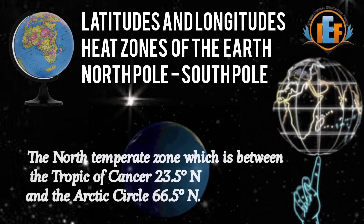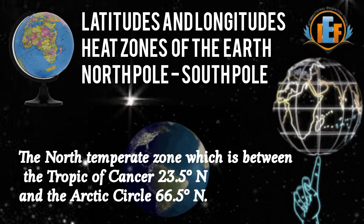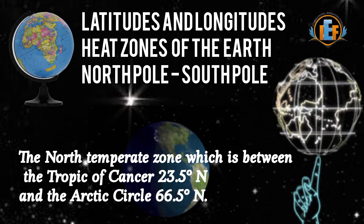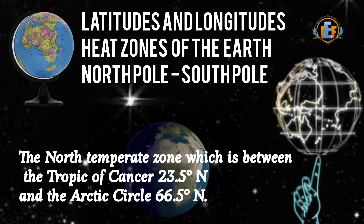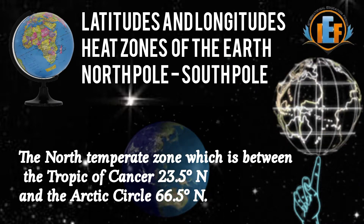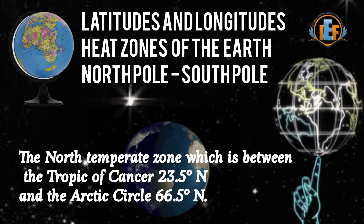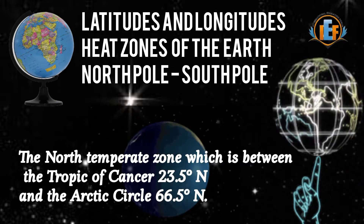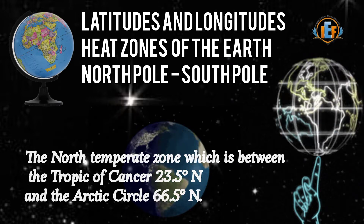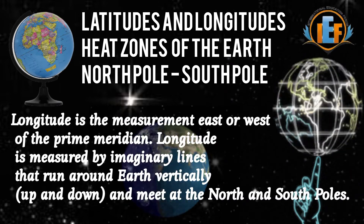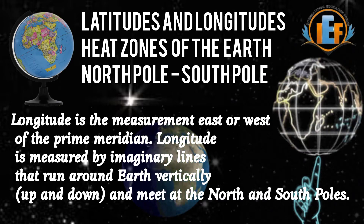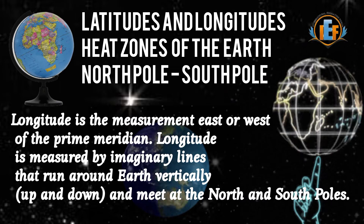They have very good and thick vegetation. The area between the Tropic of Cancer and the Arctic Circle is the north temperate zone. The area from the Tropic of Capricorn to the Antarctic Circle is the south temperate zone. These temperate zones have moderate climate — moderate climate means not too hot, not too cold.